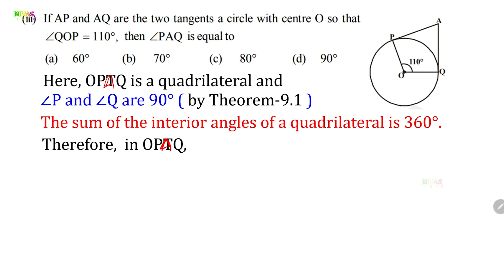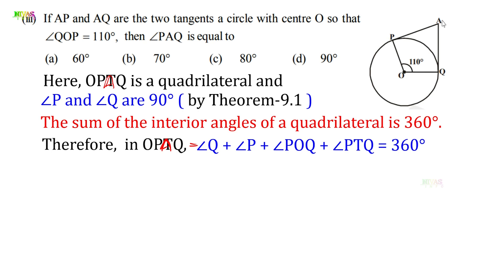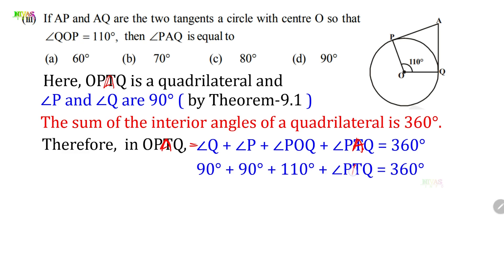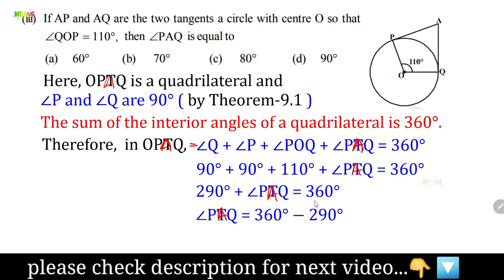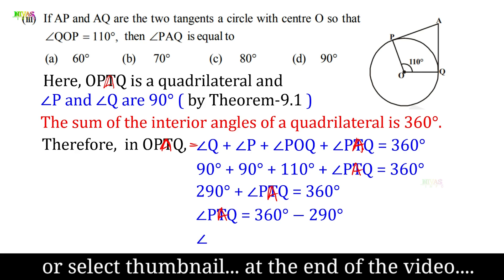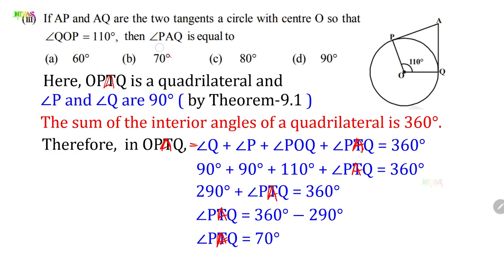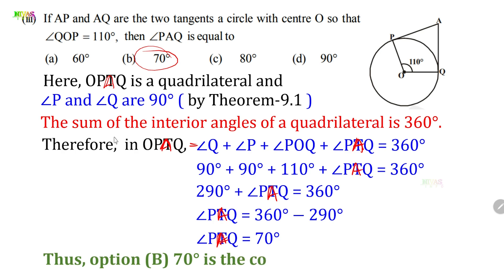The sum of all angles equals 360°. Replacing the three known values: 90 + 90 + 110 + angle PAQ = 360°. So 180 + 110 = 290, and 290 + angle PAQ = 360°. Transposing: angle PAQ = 360 − 290 = 70°. Therefore angle PAQ = 70°. Option B, 70 degrees, is the correct answer.